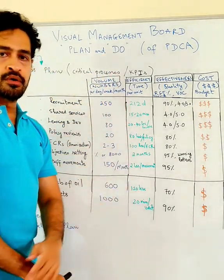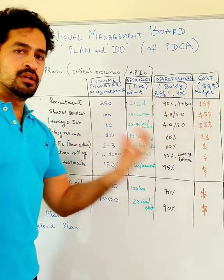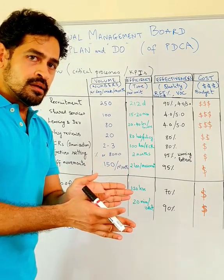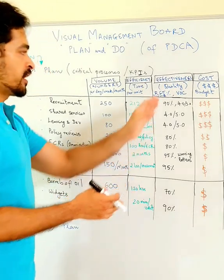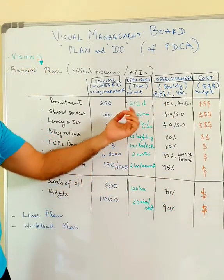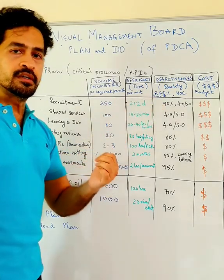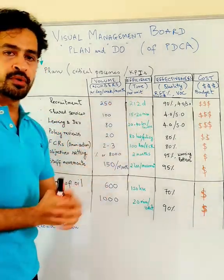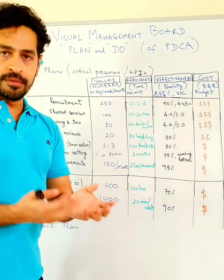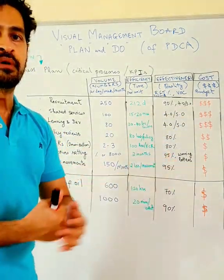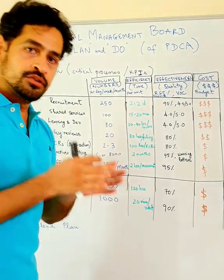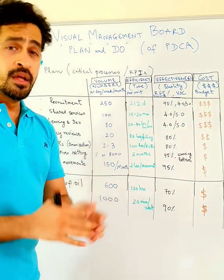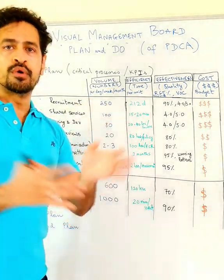Then comes effectiveness, or quality. It's not just enough that we execute in the fastest way — we have to execute quickly without sacrificing quality. It takes about 220 days, but within the process there is a certain amount of rework to recruit an Omani mature hire. If we conduct a voice of the customer survey and receive a score of 4.0 out of 5.0, that's your effectiveness measure.